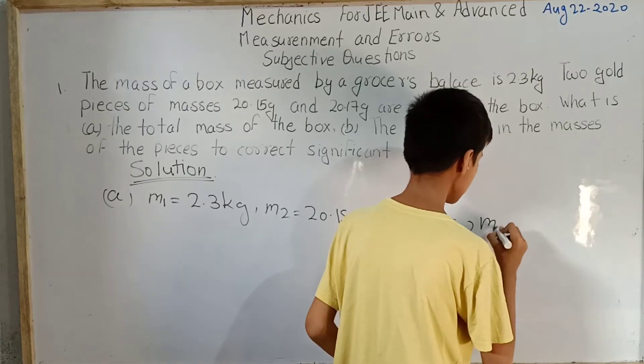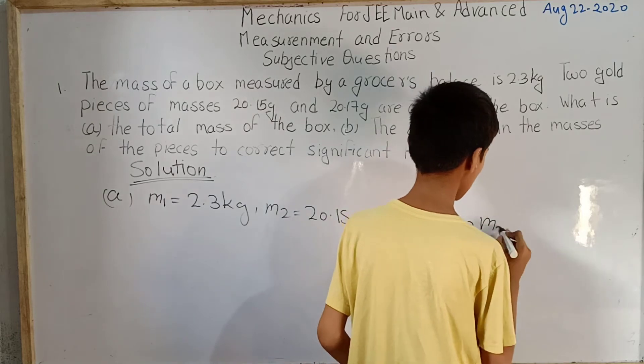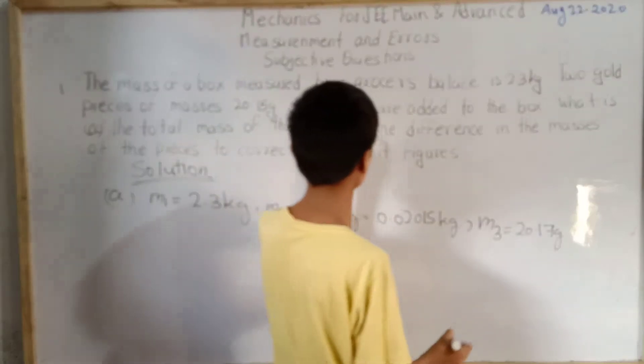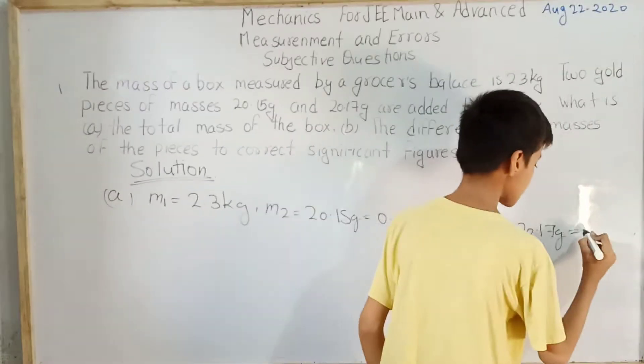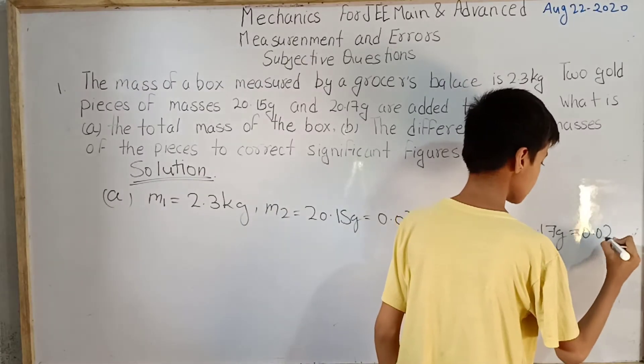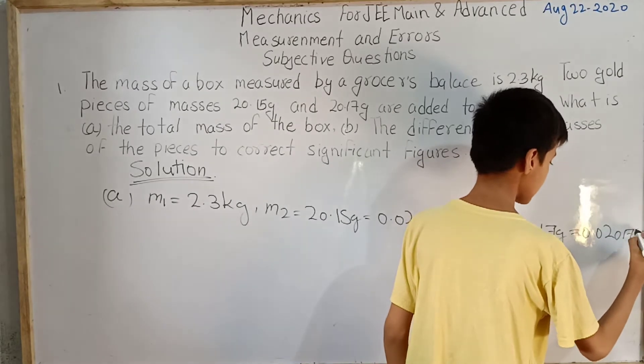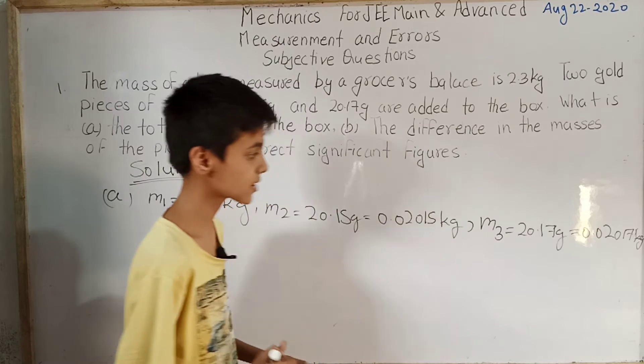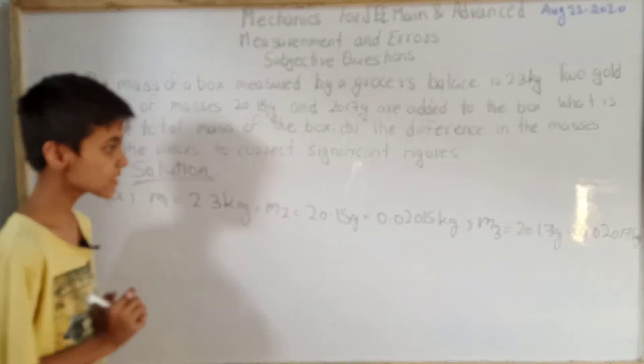Now third mass, m3 equals to 20.17 gram, which is equals to 0.02017 kg.